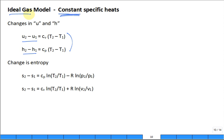How about change in entropy? Remember this equation for constant specific heats. This is the most popular: C_P times the natural log of T2 over T1, minus R times the natural log of P2 over P1.